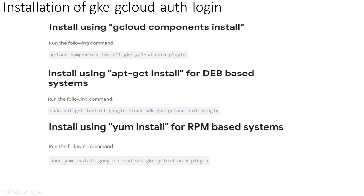These are the commands which you can use. You will need to install the gke-gcloud-auth-plugin binary on all systems where KubeCTL or Kubernetes custom clients are used. The first method is through gcloud components install — simply run the command: gcloud components install gke-gcloud-auth-plugin. This is the recommended way of doing it.